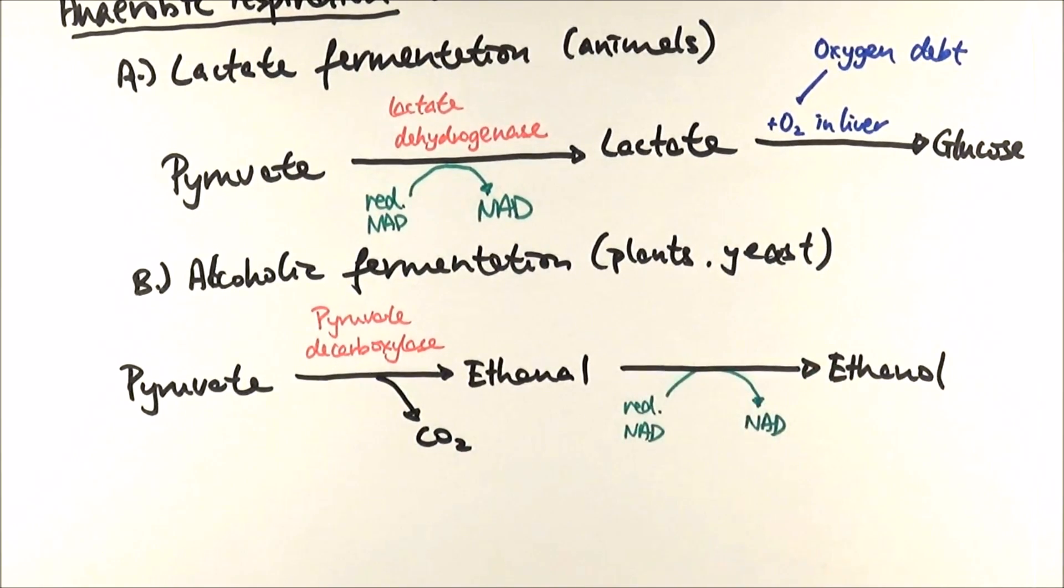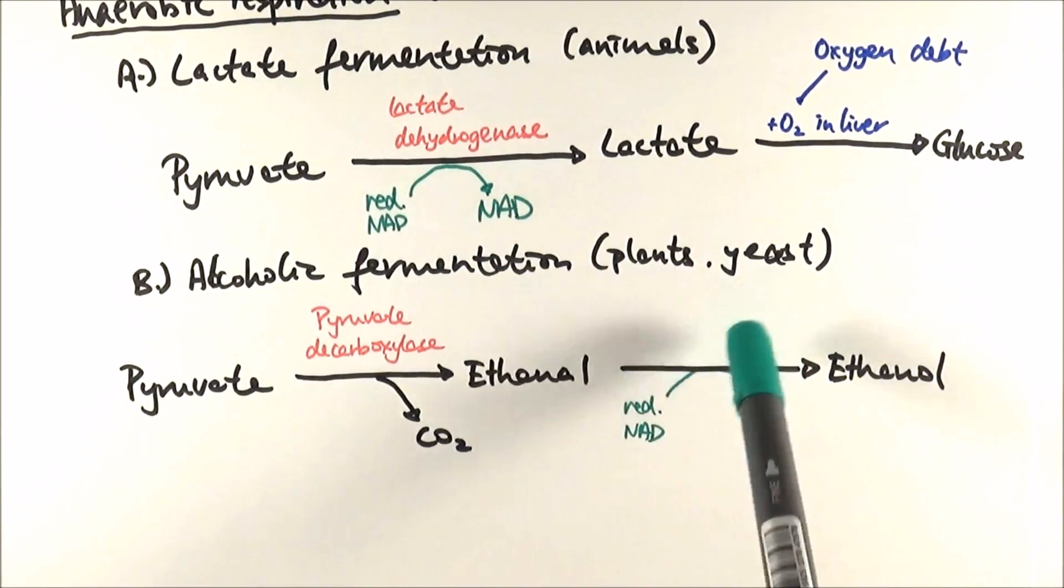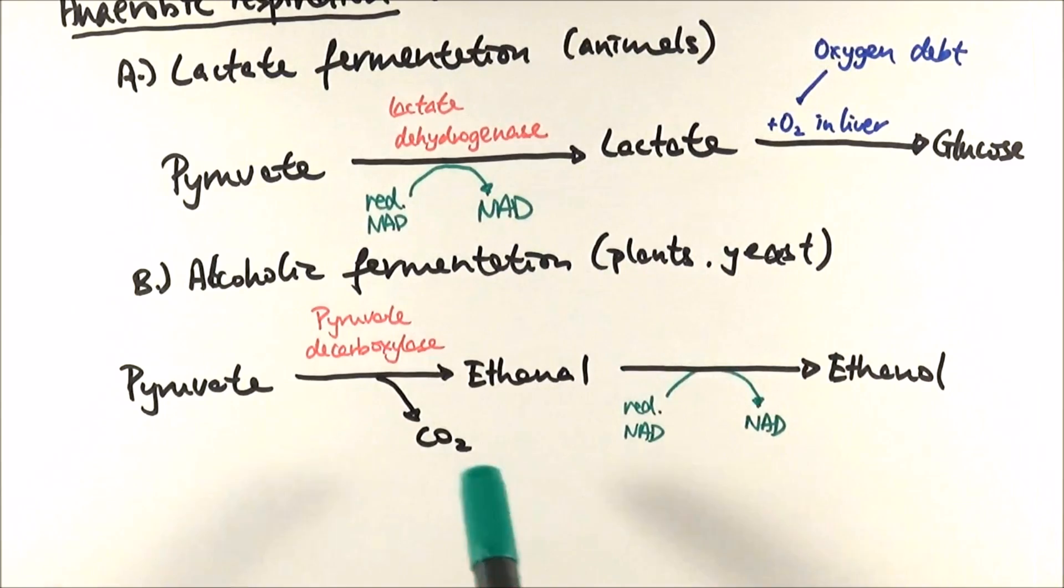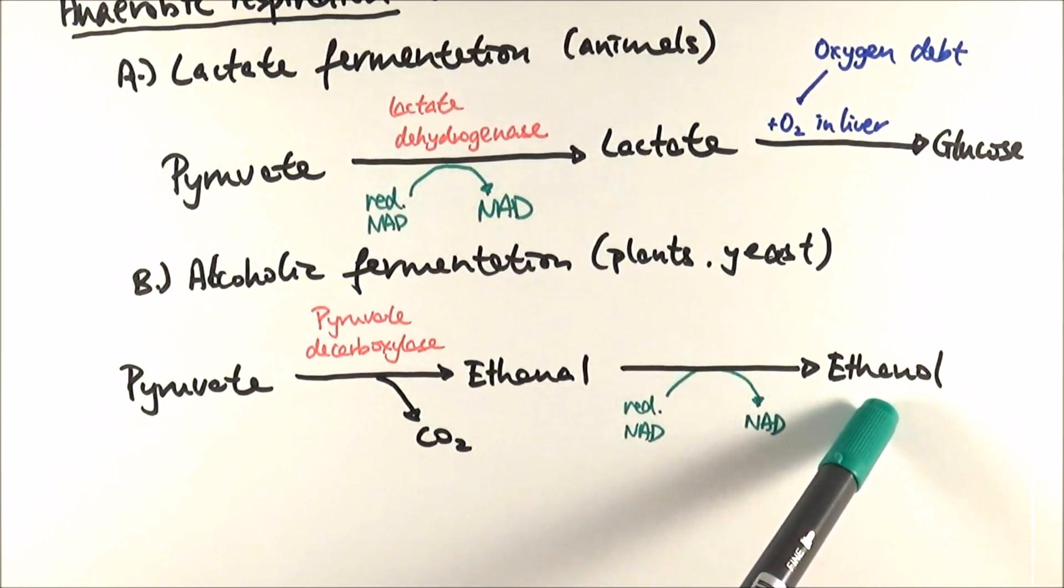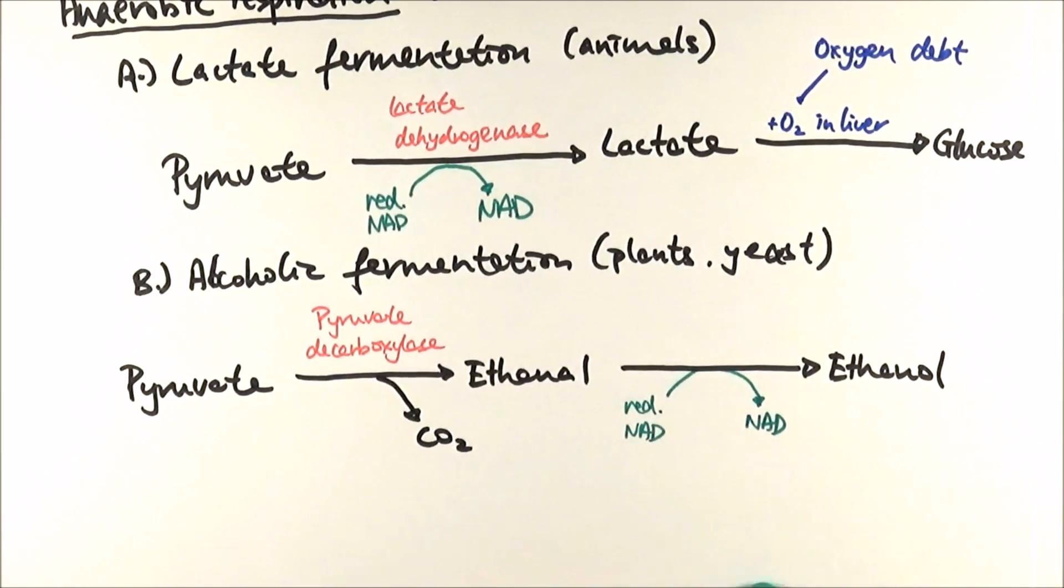But anyways, ethanol is the final product, and desired product in that sense. Apart from that, you can also use yeast in making bread, and of course, carbon dioxide is useful here because it makes the bread dough rise to make the actual bread. And in the process, ethanol is being made as well. However, because you're making bread in the oven, all the ethanol just evaporates, so you won't actually get drunk by eating bread at all.